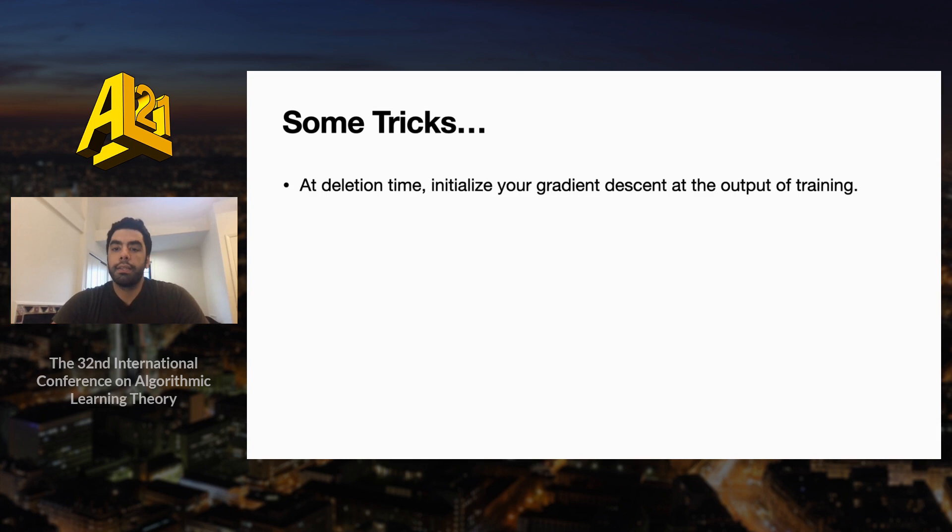The first idea is that at deletion time, we can initialize the gradient descent algorithm at the output model we have from the training, because that model has come very close to the optimizer on the training data set. And we also expect that the optimizer on the training data set to be close to the optimizer on the data set we have at deletion time, because those data sets differ in only one element, which is the data point that is going to be deleted.